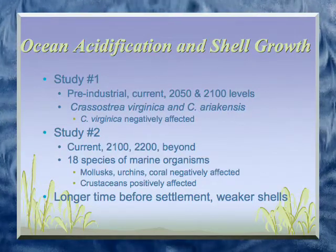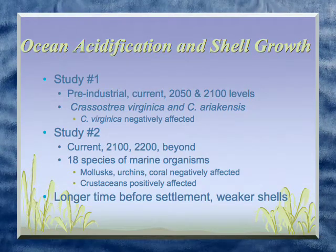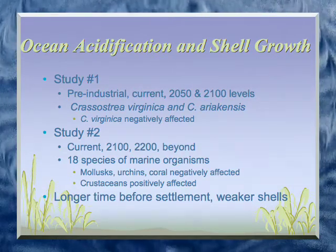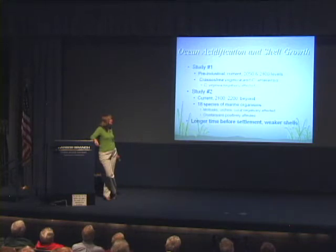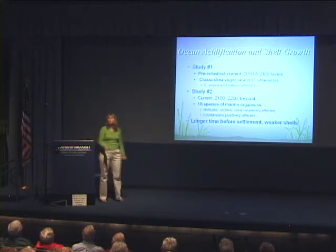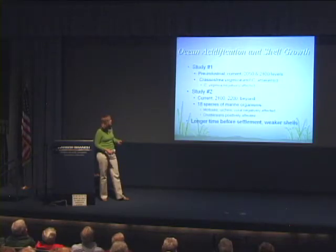Another study done in 2009 looked at even higher acidity levels and many more species — mollusks, urchins, coral, and crustaceans — finding that whether you're positively or negatively affected depends on what you are. For bivalves including oysters, lower pH means shells grow more slowly, so they remain in the plankton longer as prey items. Maybe that 1% that normally settles becomes less than that — how much less, we don't know. And when they do settle, they'll have less calcium in their shells, making them easier prey for things like crabs.